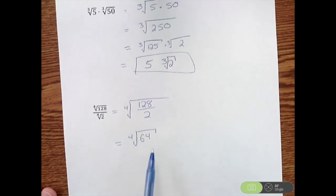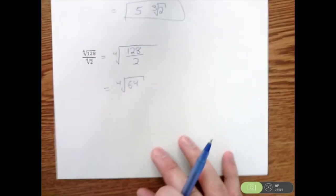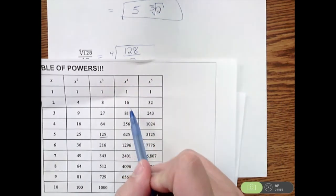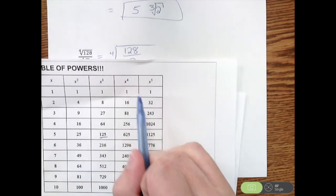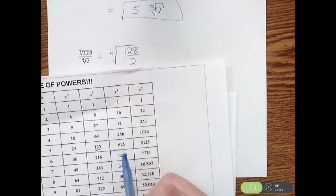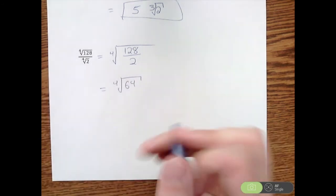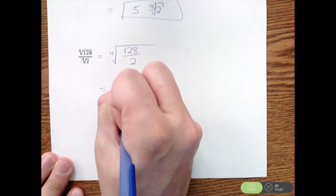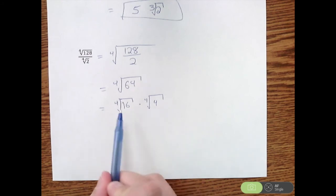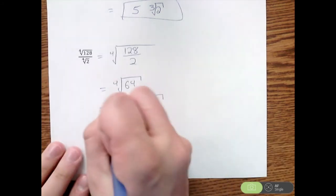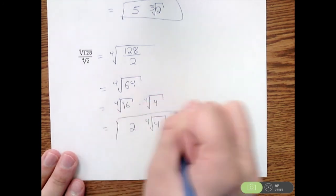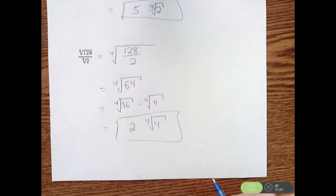I go to the x to the fourth column in the table. There's no 64 there, so I look for the largest number that divides into 64. That's 16, so it breaks down into the fourth root of 16 times the fourth root of 4. The fourth root of 16 equals 2, and the fourth root of 4 we leave as is. So our answer is 2 times the fourth root of 4.